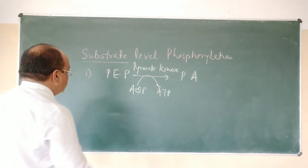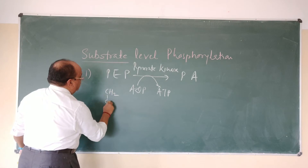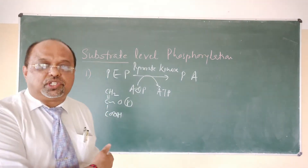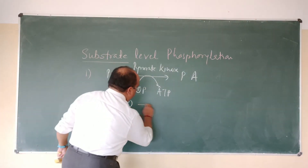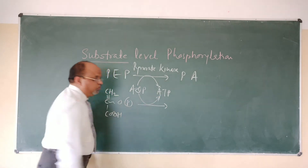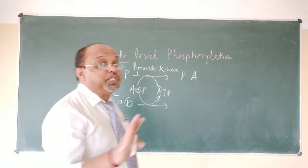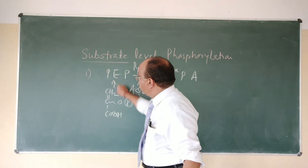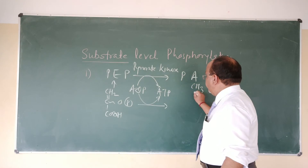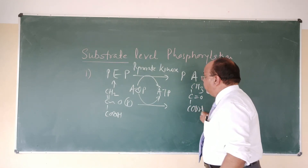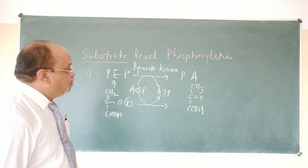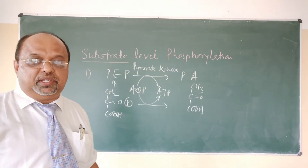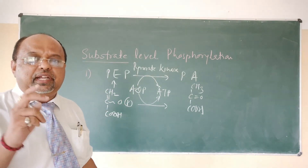The structure of phosphoenolpyruvate is: CH₂=C-O-P with a double bond, and COOH. During the reaction, ADP receives the high-energy phosphate group from phosphoenolpyruvate, and the product becomes CH₃-C=O and COOH — which is pyruvate. This is also accompanied by the splitting of water (H₂O into H⁺ and OH⁻), and this reaction is catalyzed by pyruvate kinase.